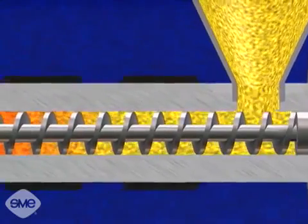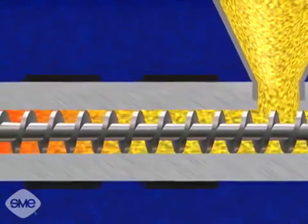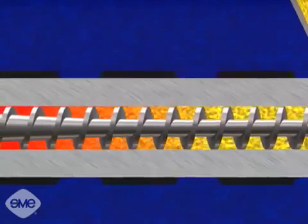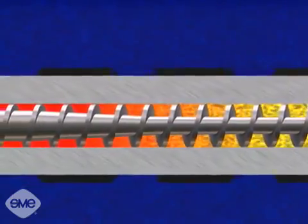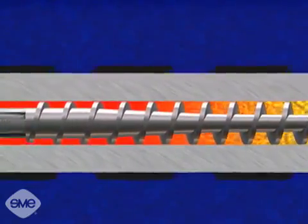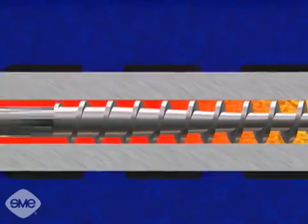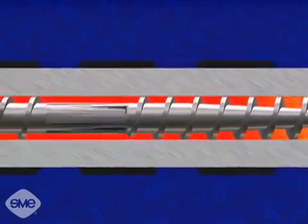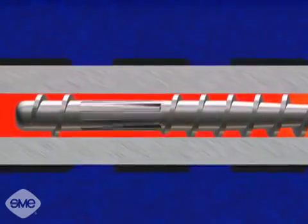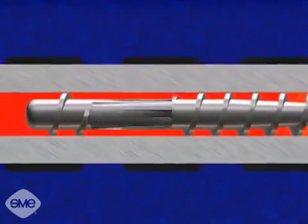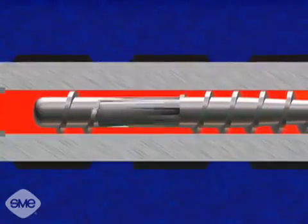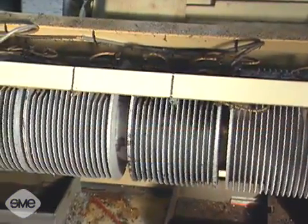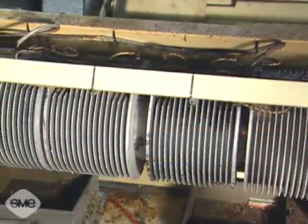The feedstock plasticizes or melts as the rotating screw drags it forward. This is referred to as drag flow. Drag flow causes the thermoplastic molecules to slide over each other, creating frictional heat which melts the material. External heating bands provide additional heat to the feed barrel, bringing the material to its final temperature.